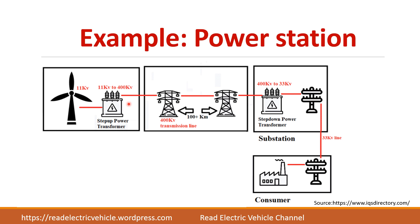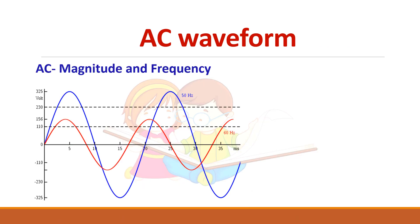AC has two parameters: magnitude and frequency. Before going into the topic, we should know certain things about the AC waveform. There are two waveforms shown — one with a peak magnitude of 325 volts and another with 156 volts. The blue waveform has a frequency of 50 Hz, while the other has a frequency of 60 Hz. In India, we normally use a 50 Hz AC supply.